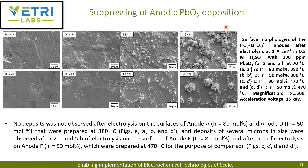SEM images confirmed these findings: no deposits were observed on anodes A and D even after two and five hours of electrolysis at 380 degrees Celsius. However, for anodes E and F at 470 degrees Celsius, large deposits ranging from 1 to 10 microns were observed after two and five hours of electrolysis, confirming the presence of lead oxide. This confirms that lead oxide deposition can be completely suppressed when thermal decomposition temperature is reduced to 380 degrees Celsius.